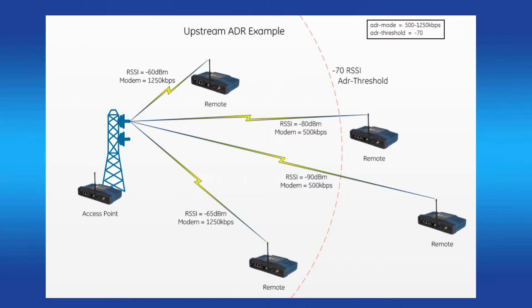It's important to note that this adaptive modulation feature only affects the upstream link — remote to access point. The access point's downstream link will use the lowest data rate.